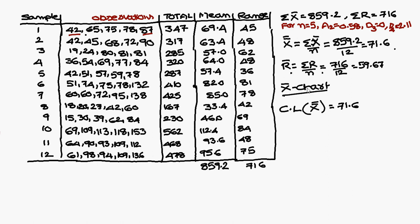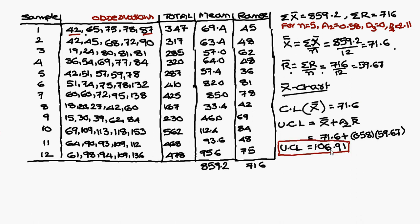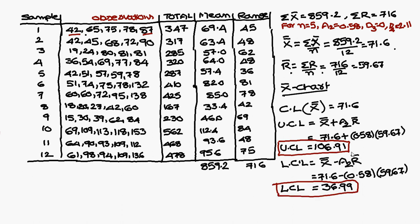Now we find the X-bar chart values. The control line (CL) is X-double-bar = 71.6. The upper control line (UCL) formula is X-double-bar plus A2 times R-bar: 71.6 + 0.58 × 59.67 = 106.9. The lower control line (LCL) is X-double-bar minus A2 times R-bar: 71.6 − 0.58 × 59.67 = 36.9.